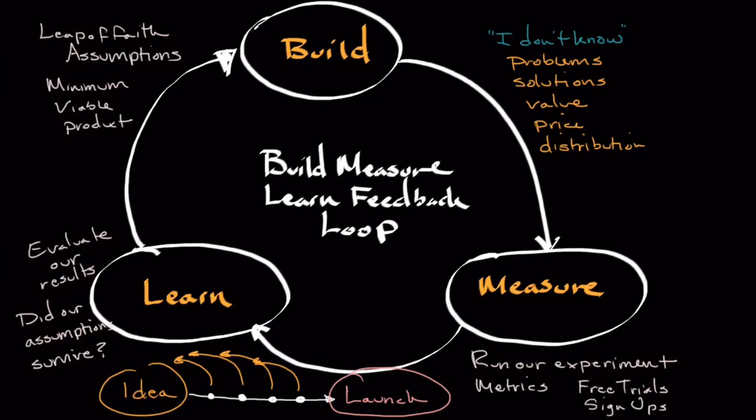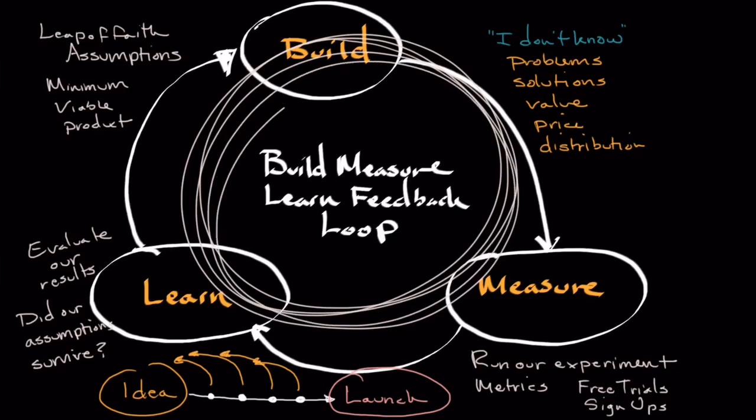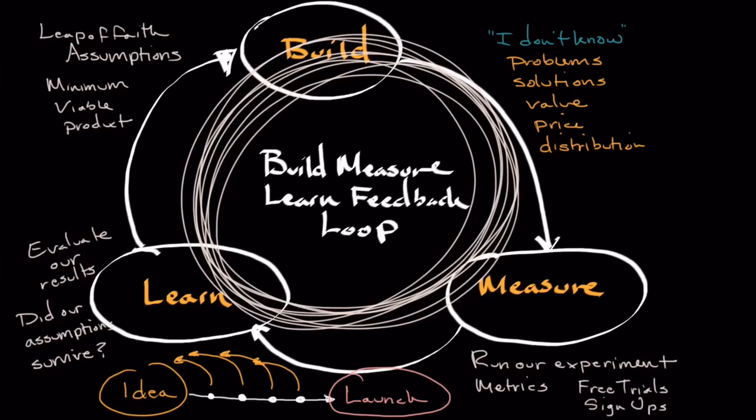That's one iteration through the build-measure-learn feedback loop. While it's better than nothing to go through it once, we want to go through this several times over—building an MVP, getting feedback, measuring results, seeing if our assumptions held to be true. At each stage, we're refining our understanding of the product and customer's problems, getting closer to either product-market fit or pivoting our business, or even moving on to another idea altogether.